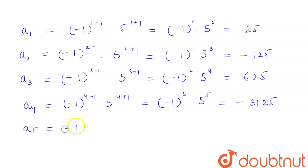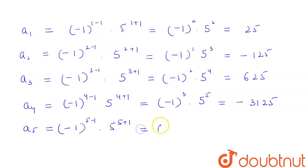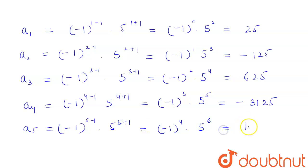The last term, a5, is equal to (-1)^(5-1) × 5^(5+1), that is equal to (-1)^4 × 5^6, and this will be equal to 15625. Hence, we have found the first 5 terms of the sequence.